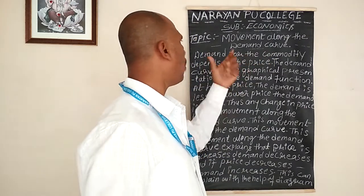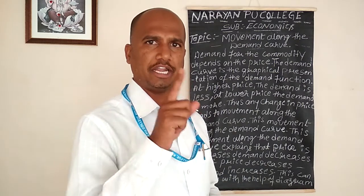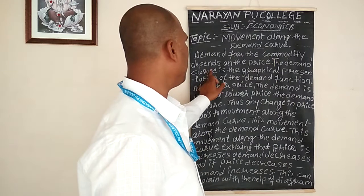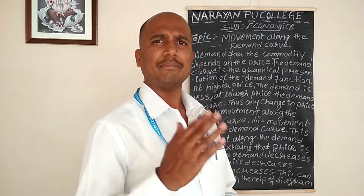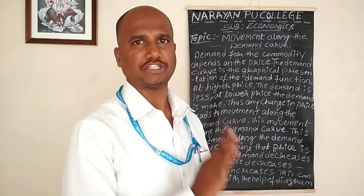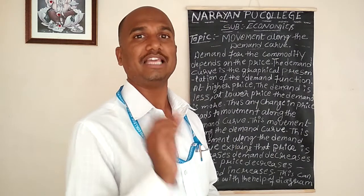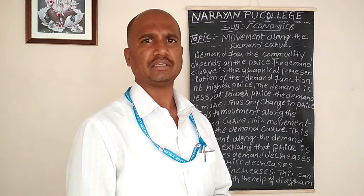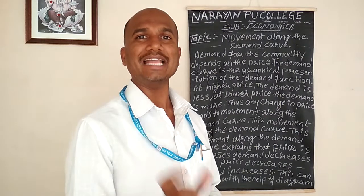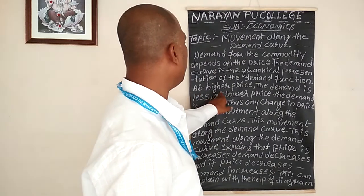Demand for the commodity depends upon the price. The demand curve represents a graphical presentation of the demand function. Changes in the prices of the commodity lead to changes in the demand.